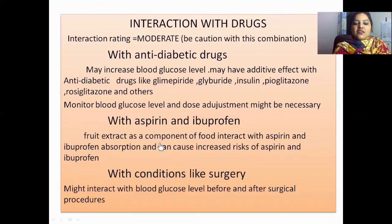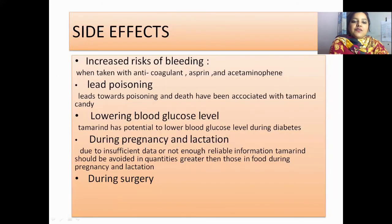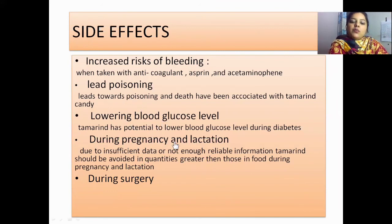With aspirin and ibuprofen, tamarind fruit extract, as a component of food, can interact with aspirin and ibuprofen absorption and can cause an increased risk of bleeding. With conditions like surgery, tamarind might interact with blood glucose levels before and after surgical procedures. Its side effects are increased risk of bleeding, lead poisoning, lowering blood glucose level, and concerns during pregnancy, lactation, and surgery.